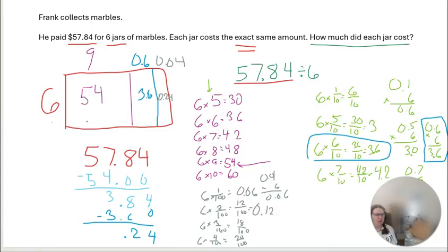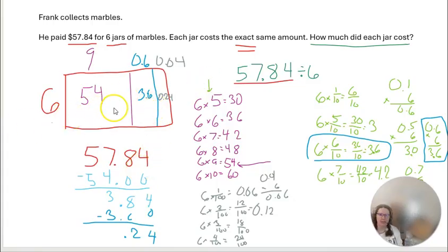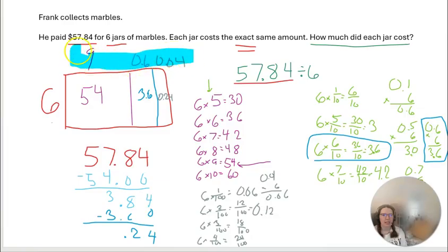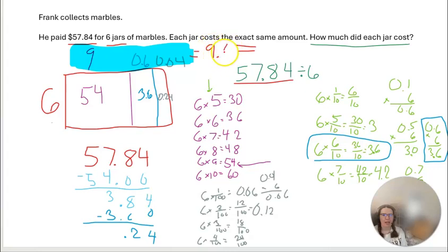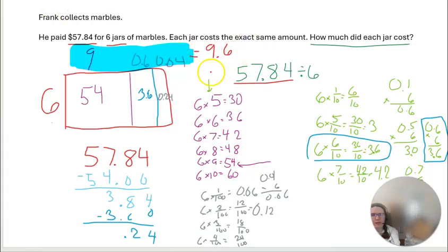Now, how do I get my answer? If I add together all three pieces, I get $57.84 — the whole rectangle. Six times nine is 54, six times six-tenths is 3.6, and six times four-hundredths is 0.24. To get my answer I put these three parts together: nine, plus six-tenths, plus four-hundredths equals $9.64. Each jar costs nine dollars and sixty-four cents.